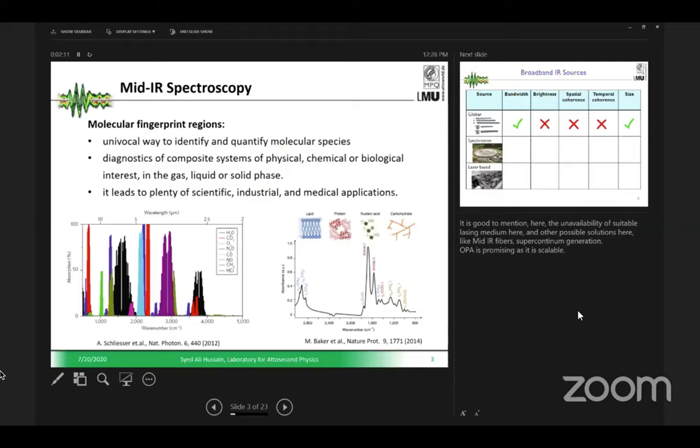We have water, CO2, O3, NO2, and what we are actually interested in, in our group under Professor Ferenc Krausz, is to study biomolecules. If you look at biomolecules in human blood, you have lipids, proteins, nucleic acids, carbohydrates, and all of these have their eigen frequencies in this mid-infrared region.